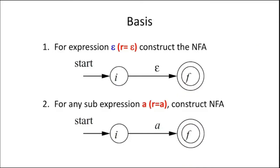Here is the basis rule. For the expression epsilon — meaning the empty string — the NFA simply moves from a start state to final state F on input epsilon. Similarly, for any sub-expression where R equals a single symbol A, construct the NFA with a start state I, give input A, and reach the final state F. This is because your regular expression R is only A here.